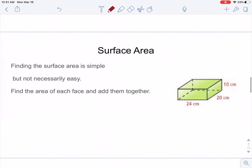Surface area. This is what we're talking about. Finding the surface area is simple, but not necessarily easy. The way that you find surface area is by finding the area of each face separately, and then adding them together. Since this is a rectangular prism, all we have is rectangles. So, I'll let you figure that one out yourselves.